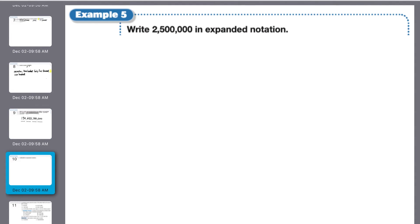Write two million, five hundred thousand in expanded notation. So we separate it out like this: two times one million, plus five times one hundred thousand.